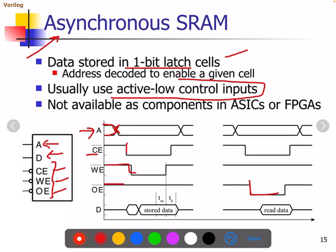When output enable is high, that means it has not been enabled. Write enable is made low, meaning it has been enabled. The chip is enabled and address is available. At this point, data will be stored into the memory. There are timing delays that happen — something called setup time and hold time. When all three signals are active — address is available, chip is enabled, write is enabled, and data is available — data will be stored into the memory.